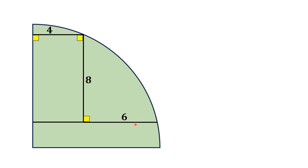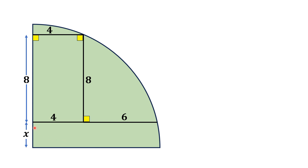First of all, we extend this line towards this line. From here we can see that the length of this line is the same as this one, which is four units. Moreover, this length is eight units because this length is eight units and it forms a rectangle. Let us consider that this length from the center to this point is x, and this angle is 90 degrees. Let us draw a radial line from this point to this point.